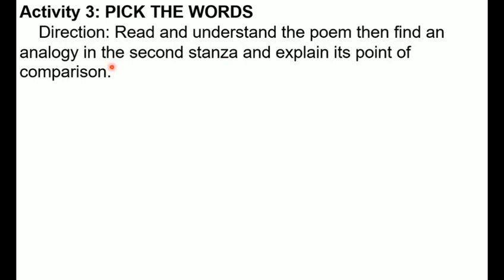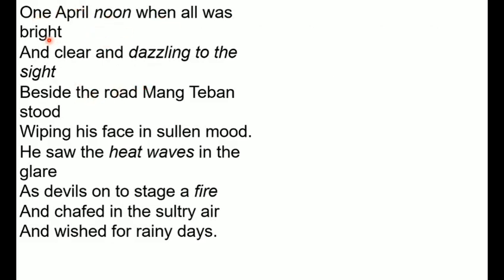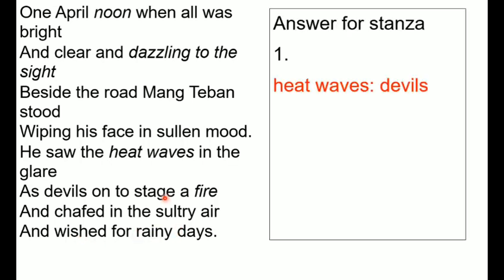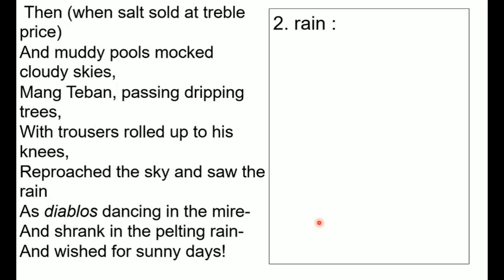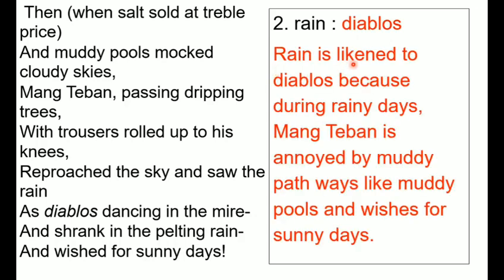Activity three — Pick the Words: read and understand the poem, then find an analogy in the second stanza and explain the point of comparison. The poem 'One Apple Noon': heat waves are described as devils on a stage of fire. Answer for stanza one: heat waves are being compared to devils — heat waves are like devils on a stage of fire. Number two: rain is being compared to devils because during rainy days, Mounteban is annoyed by muddy pathways and wishes for sunny days.